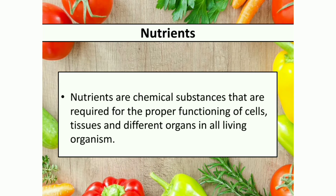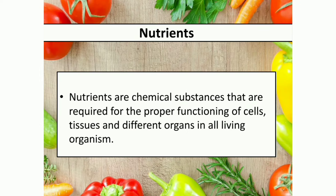Nutrients are chemical substances that are required for the proper functioning of cells, tissues and different organs in all living organisms. They are chemical substances which allow our cells, tissues, and our body's different organ systems and organs to function properly.